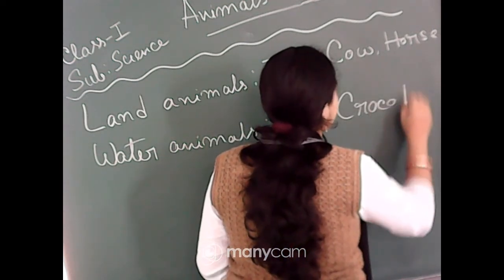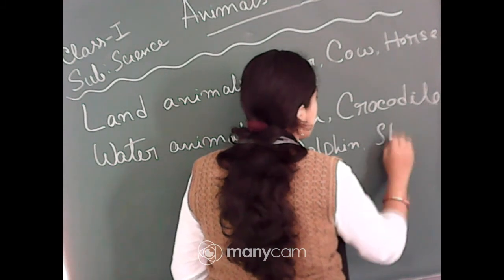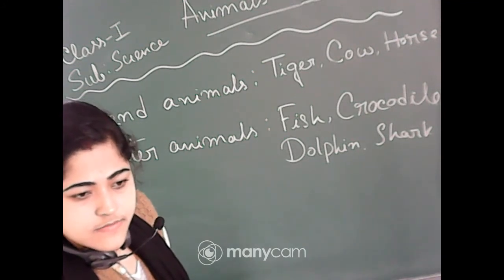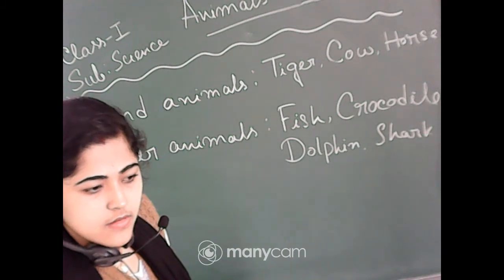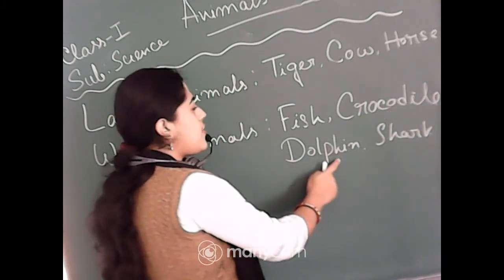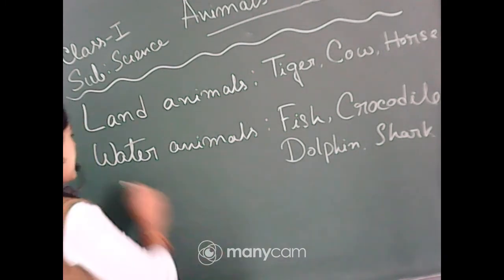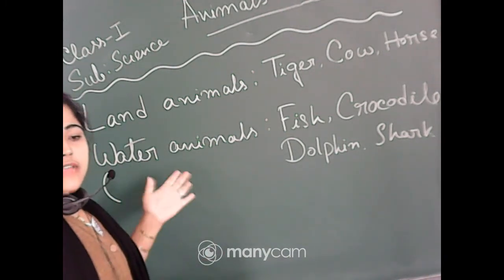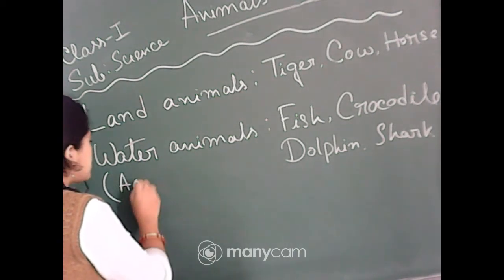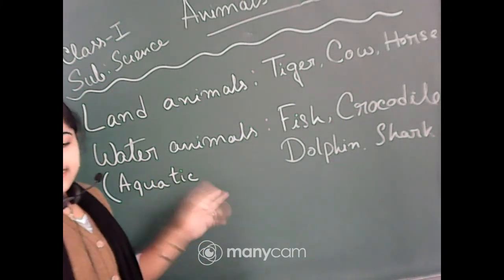I am writing on the board — crocodile, fish, dolphin, shark. Can you see the board? Good. So crocodile, fish, dolphin, and shark — I just gave four examples. These are water animals. You can also learn another name: aquatic animals. That is spelled A-Q-U-A-T-I-C.